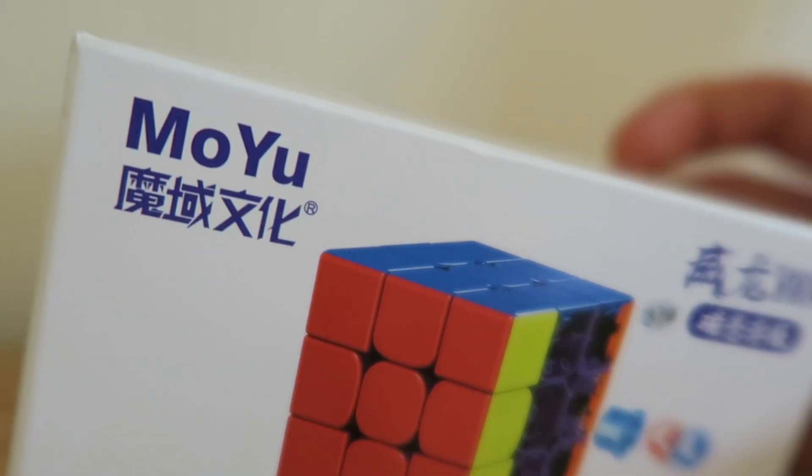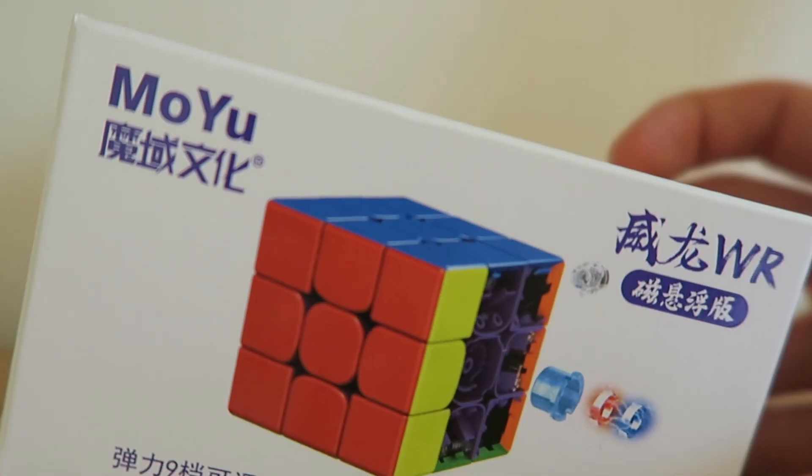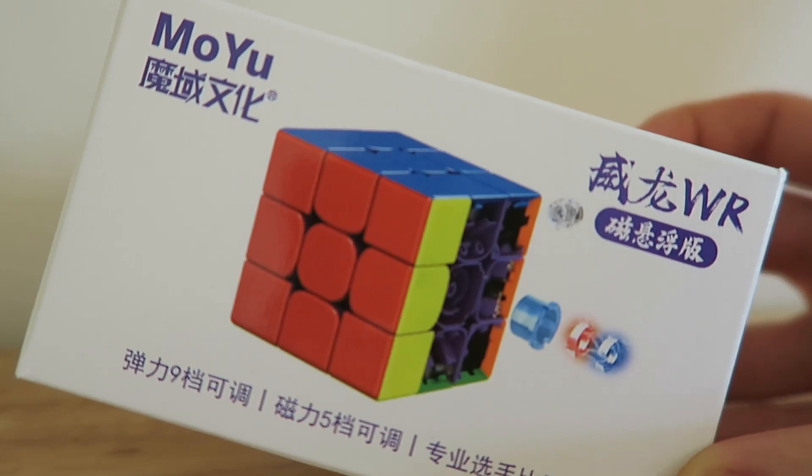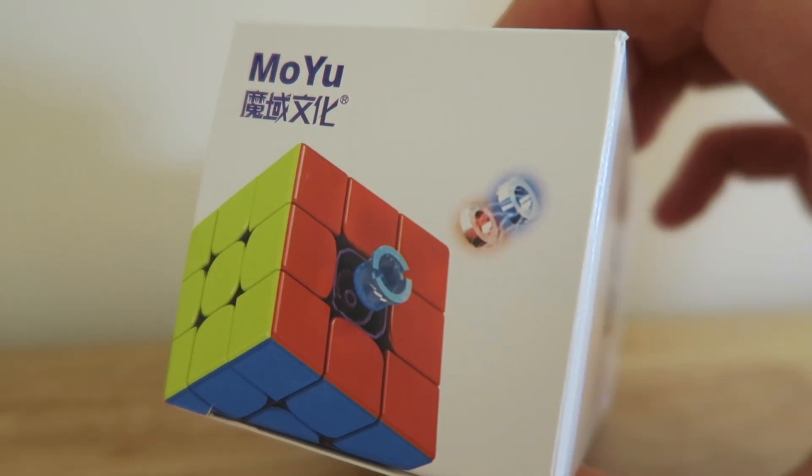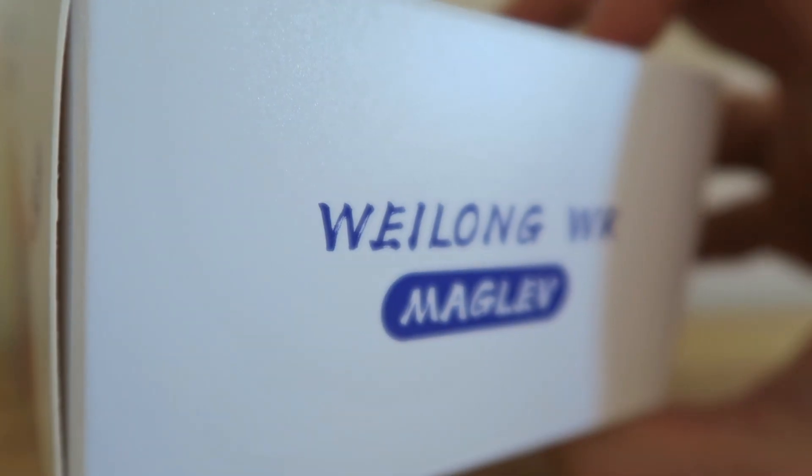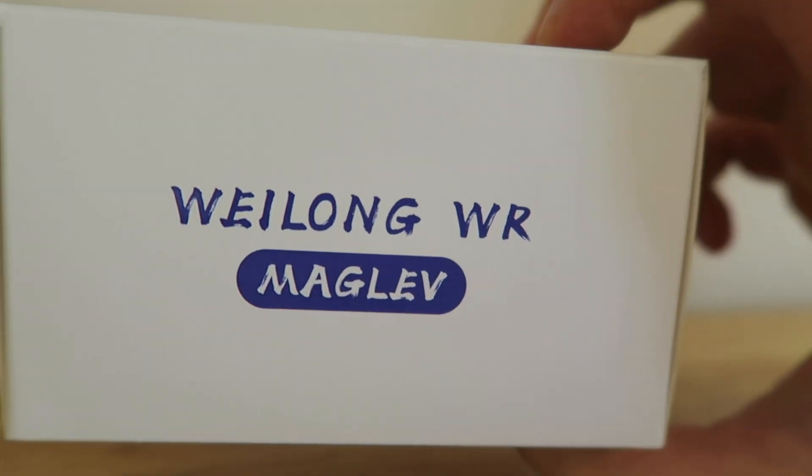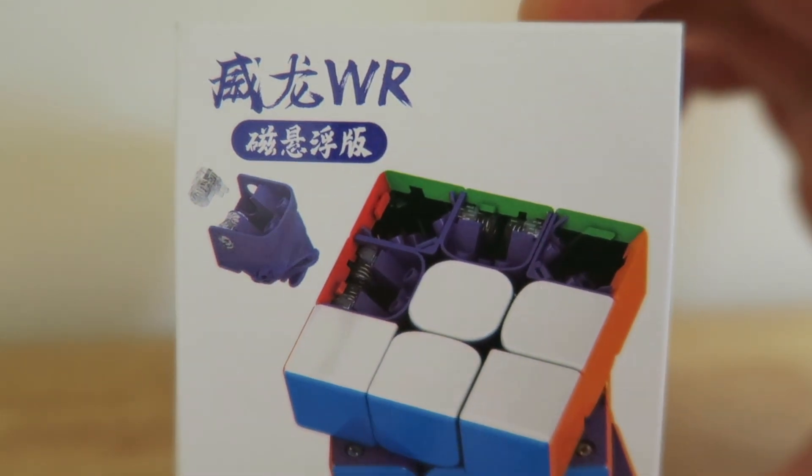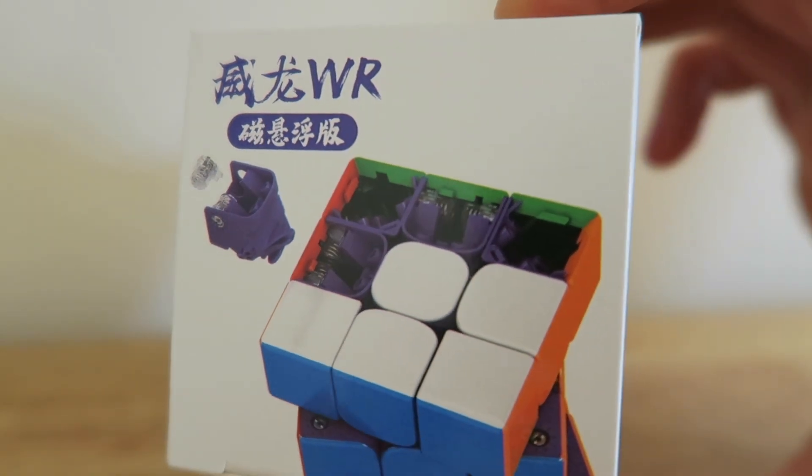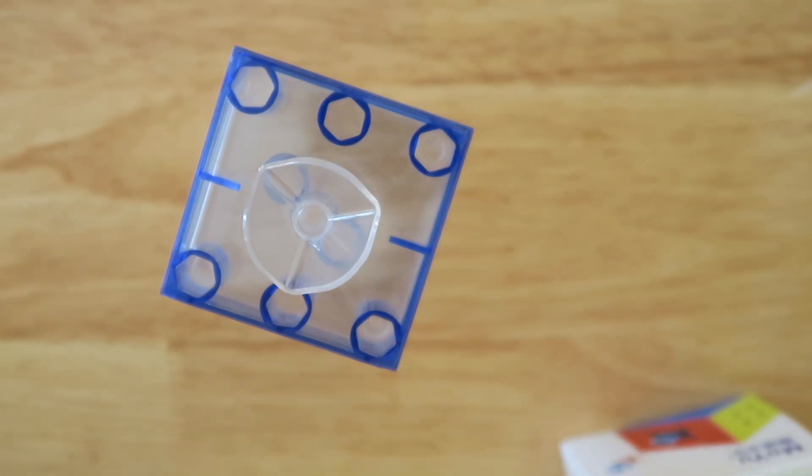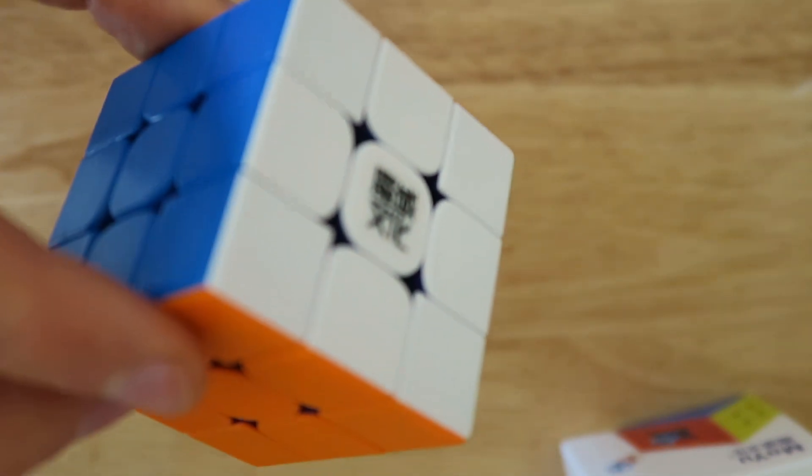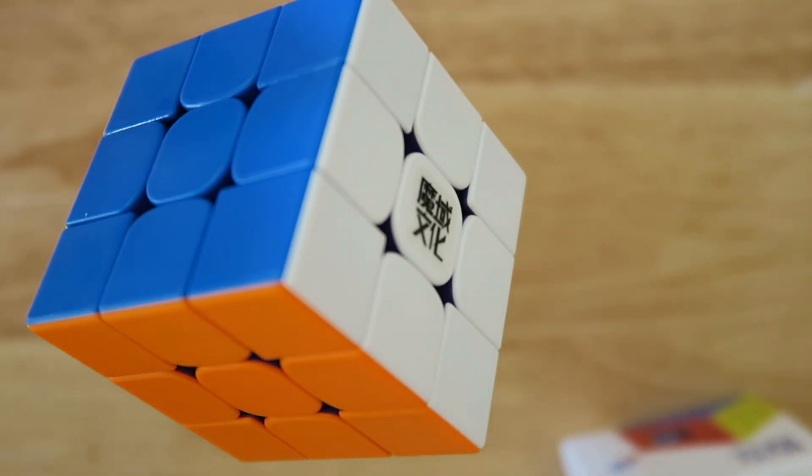This is the Moyu Weylong WRM Maglev 2021 3x3. For quite a while the Moyu Weylong was the puzzle to own if you wanted to break your records and it's become a top name in cubing beginning with the Moyu Weylong, followed by the GTS, then the GTS V2, then the WRM, and now the WRM Maglev which came out at the end of last year.